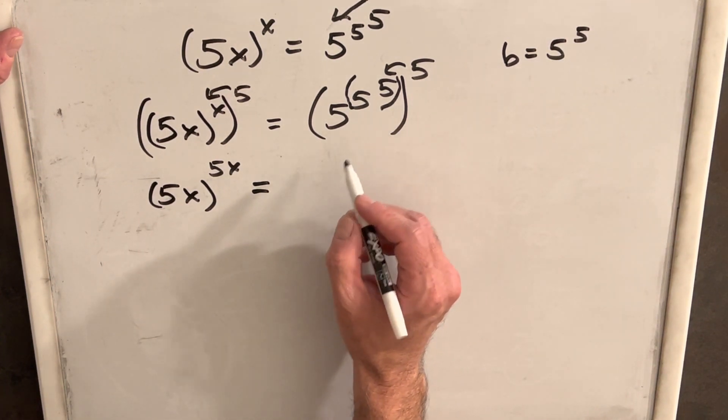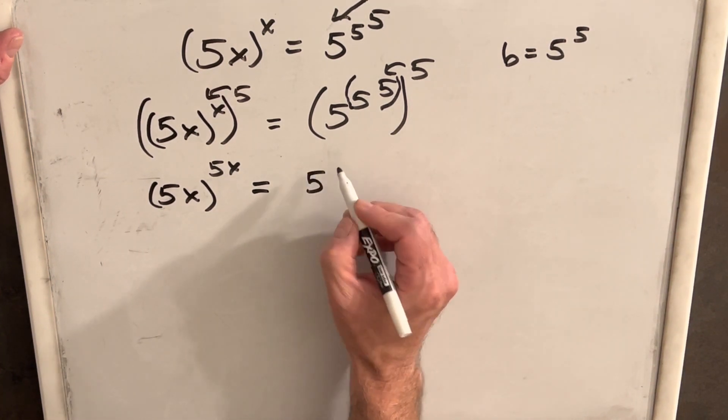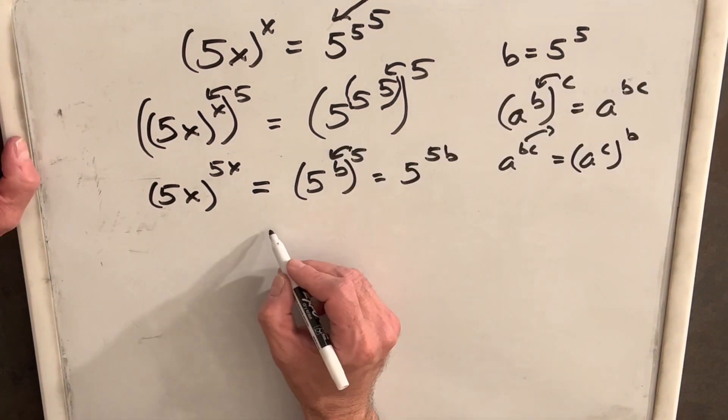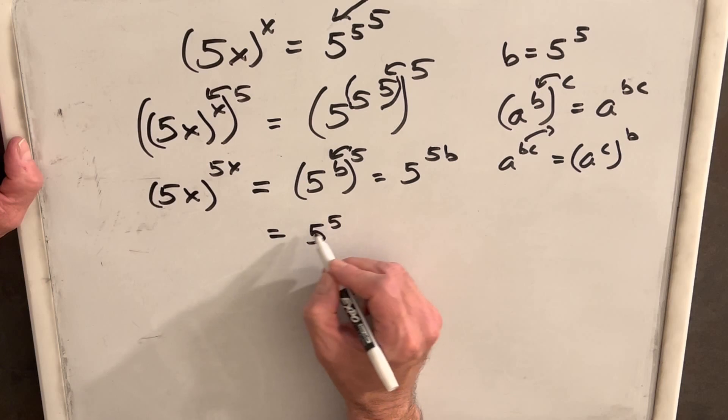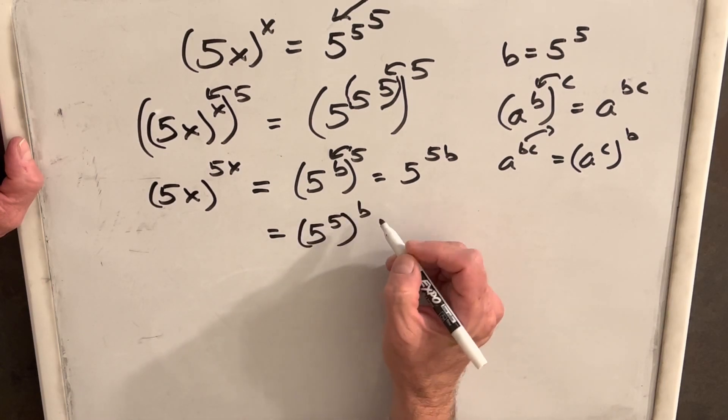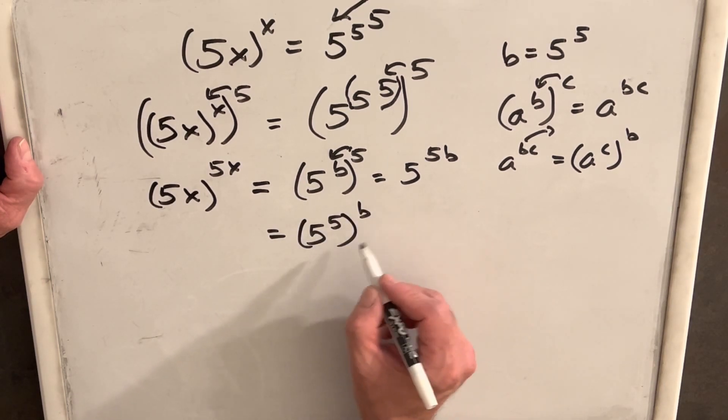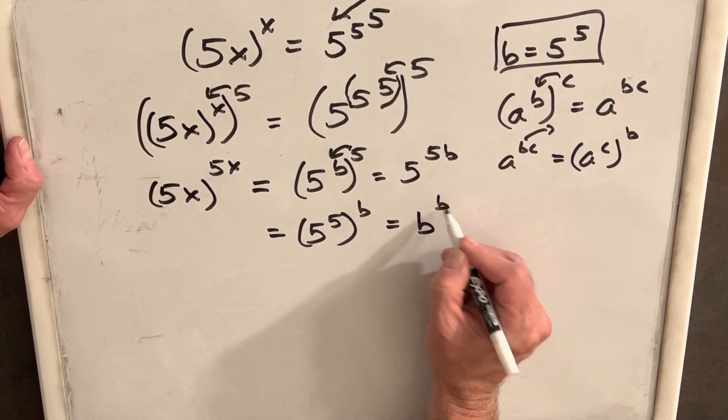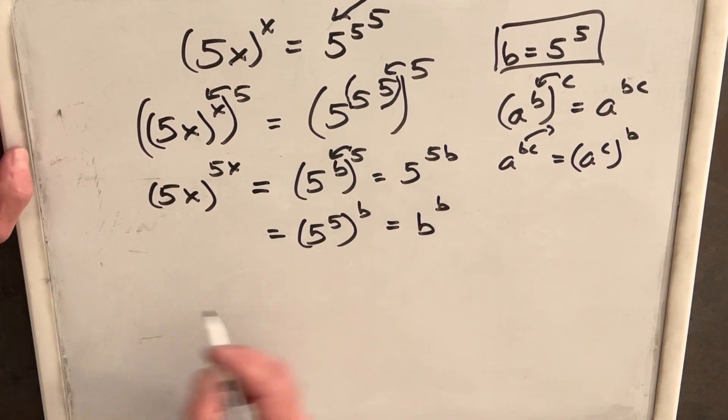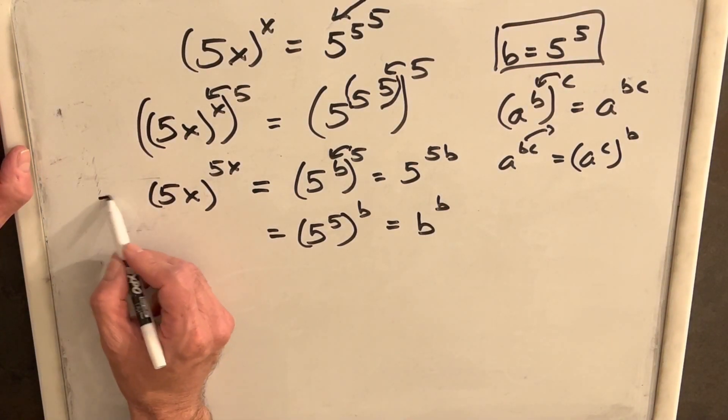So then if we do that and we write this right side of the equation as 5 to the 5 to the b, but then we establish b, we already made the substitution. So we can call this b to the b, which is exactly what we want, because then over here...